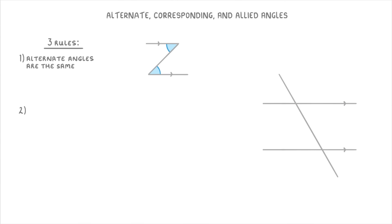The second rule is pretty similar, but it says that corresponding angles are the same. And corresponding angles are these two angles that you find in an F shape. For example, on our diagram, the F shape is here. So these two 60 degree angles are corresponding angles.